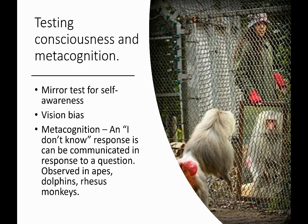Another indicator of higher level intelligence is metacognition — thinking about thinking. In studies with apes, dolphins, and rhesus monkeys, they have shown the ability to answer questions with an 'I don't know' response. When given a question they can't answer, they respond with 'I don't know,' reflecting their ability to reflect on their own thoughts — something we would see as a higher degree of intelligence.